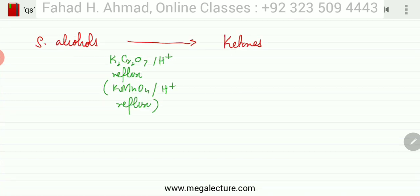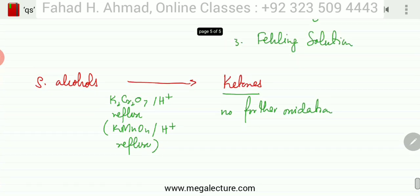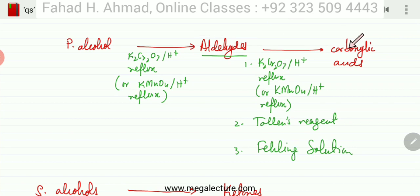You should also remember that secondary alcohols get oxidized to ketones using K2Cr2O7 or KMnO4 but there would be no further oxidation. There is going to be no further oxidation of ketones. So that is the major difference between aldehydes and ketones. That aldehydes are going to get oxidized, ketones are not going to get oxidized.